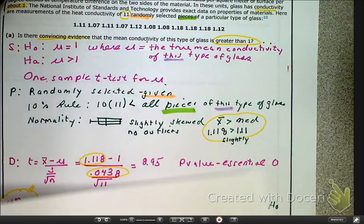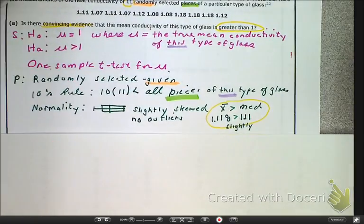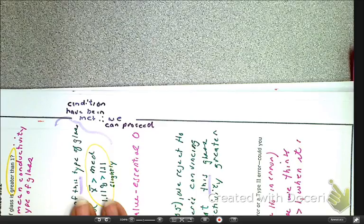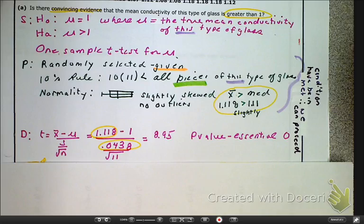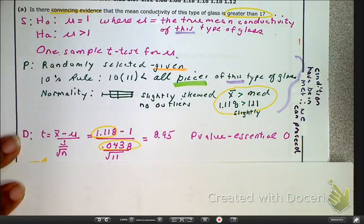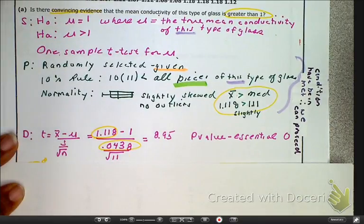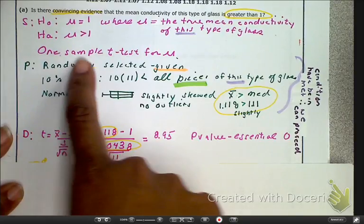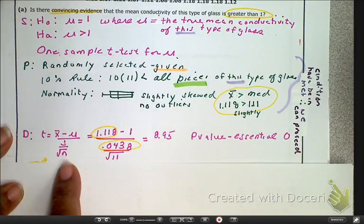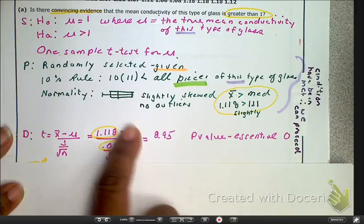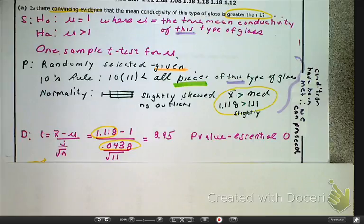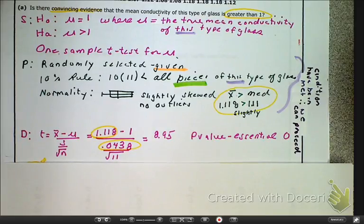So now, after I do that, now I'm ready for the do portion. So now that we look at the do, this is a one-sample t-test for mu, and we already have that. And we just plug in the naked values, and now we're going to go back to our calculator and have the calculator do all the work.